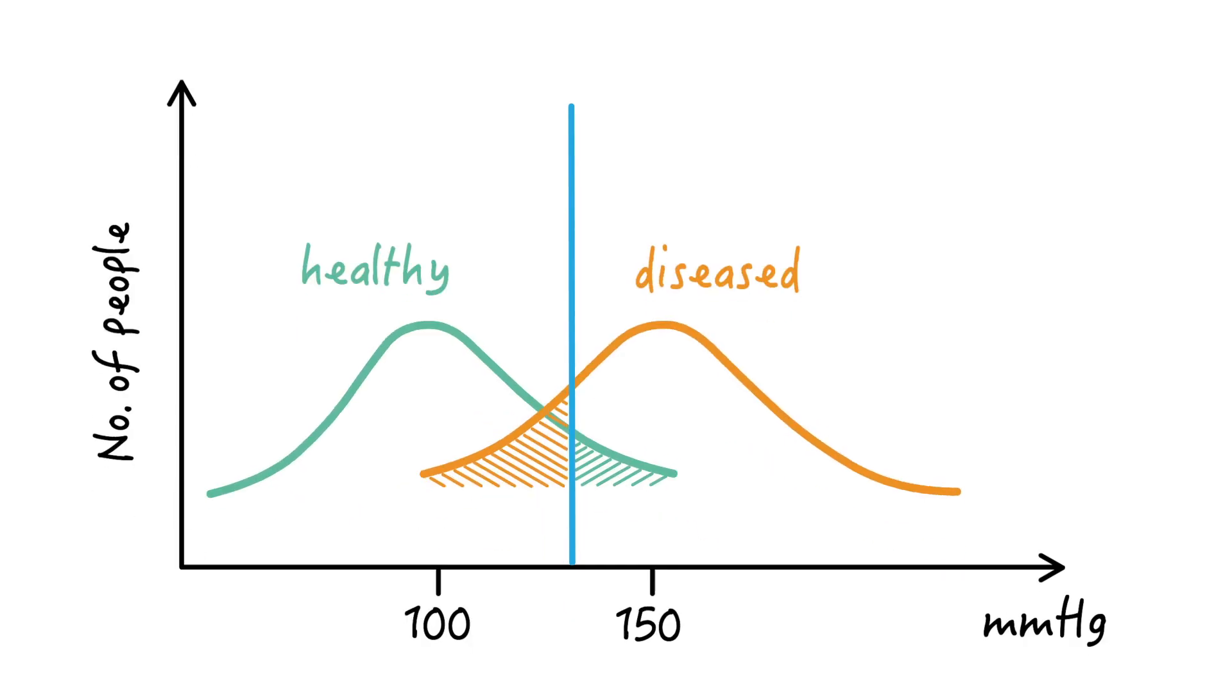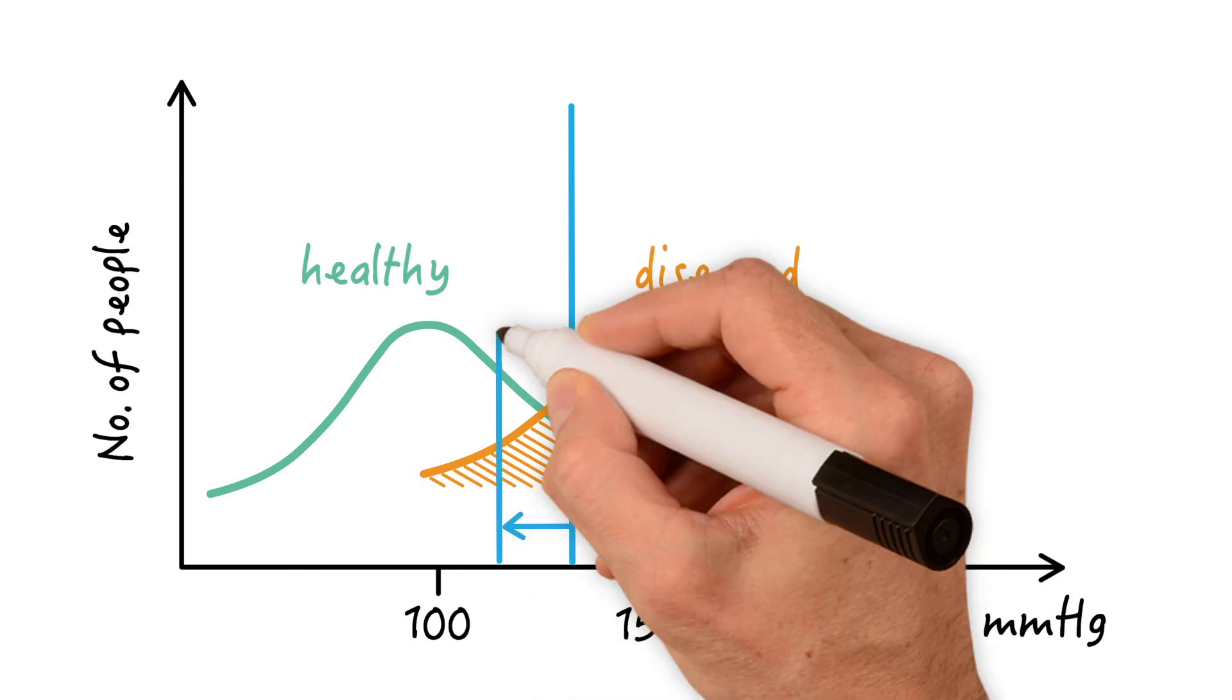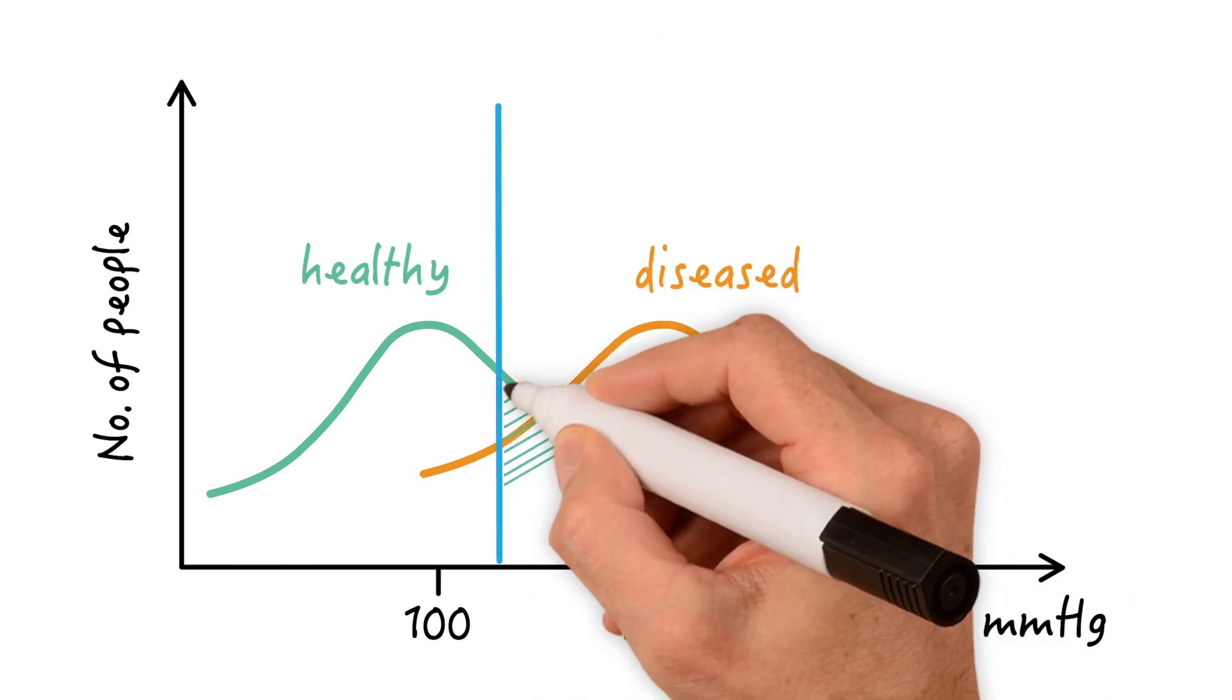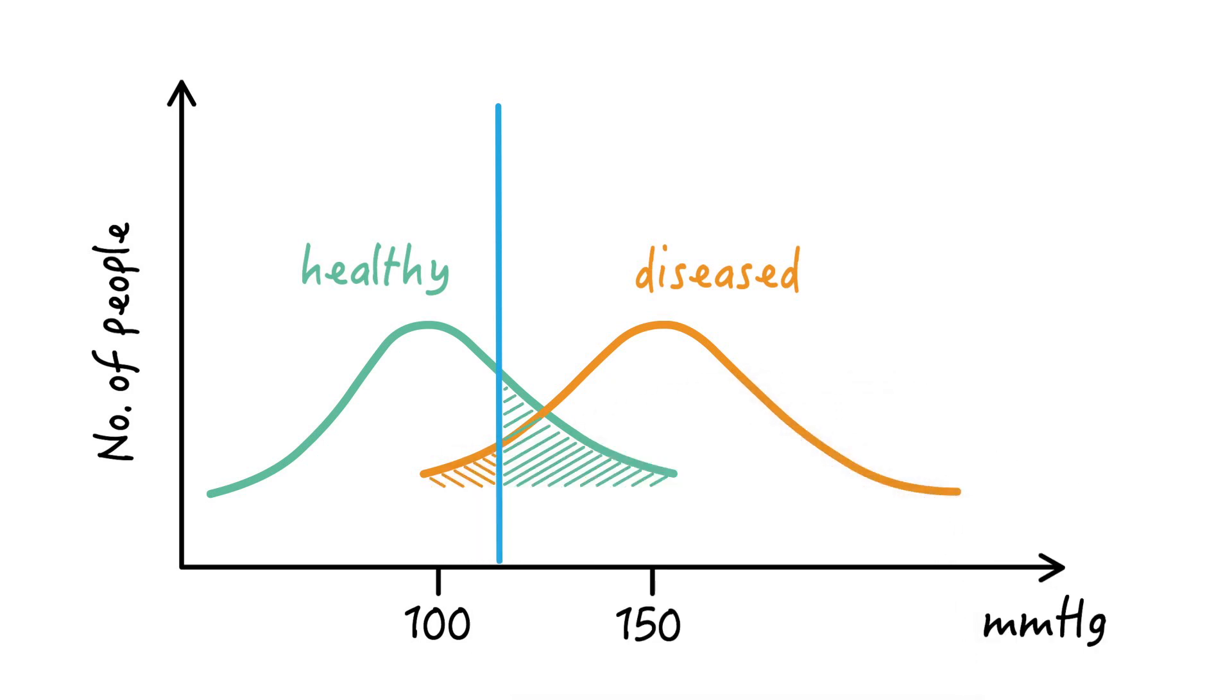Coming back to the blood pressure distributions we talked about previously, we said that moving the threshold of the test will change the proportion of people falsely and correctly classified as diseased and as healthy.